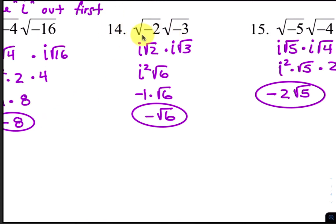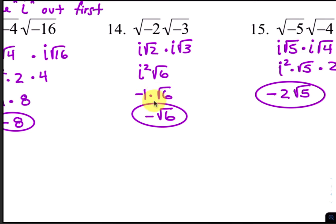For number 14, take the i's out first. So this becomes i square root of 2 and i square root of 3. i times i is i squared, and 2 times 3 is 6. i squared is negative 1, so your final answer is simply negative square root of 6.